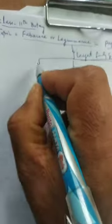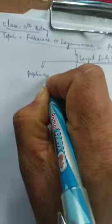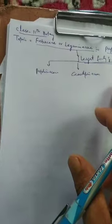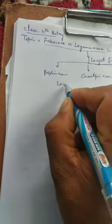On the basis of characters of corolla and androecium, this family has been divided into three sub-families: Papilionoideae, Caesalpinioideae, and Mimosoideae. Fabaceae or Leguminaceae is considered to be the largest polypetalous family of dicots and one of the largest families of angiosperms.